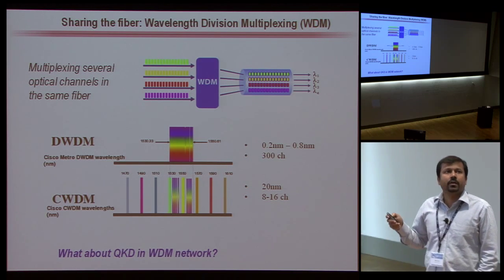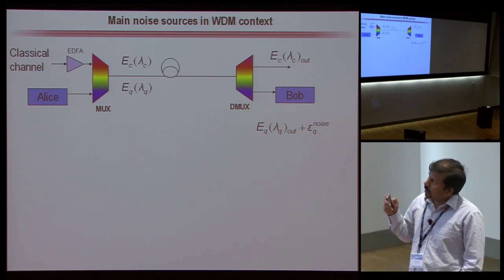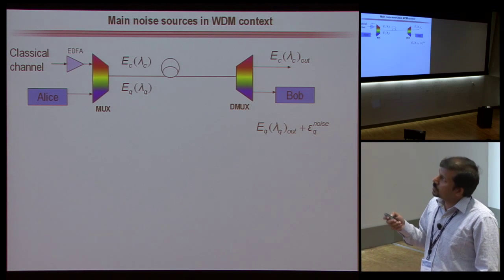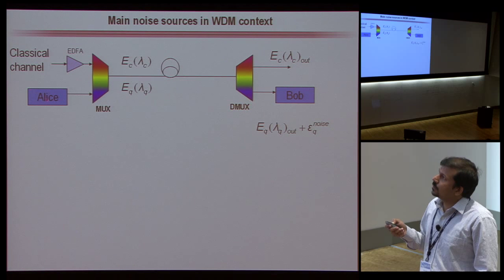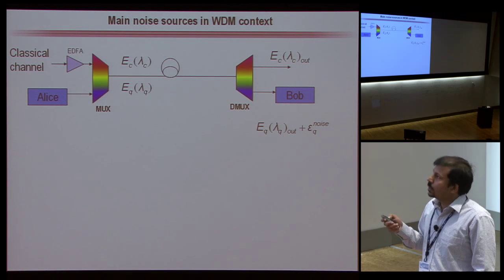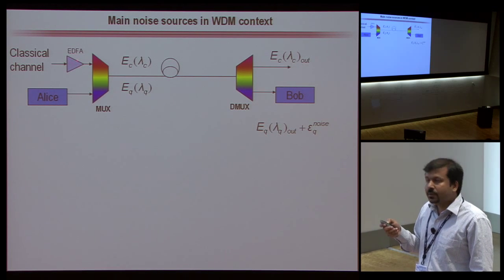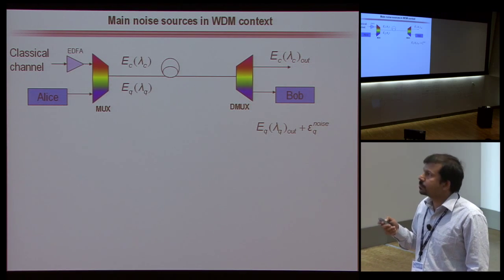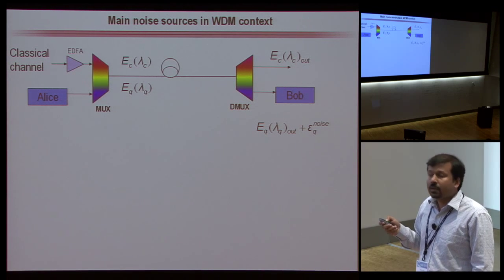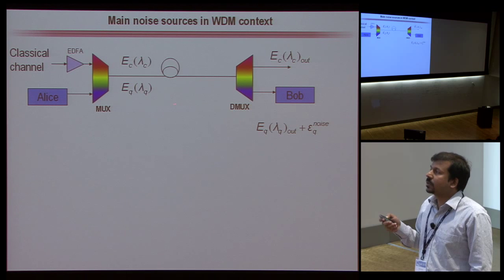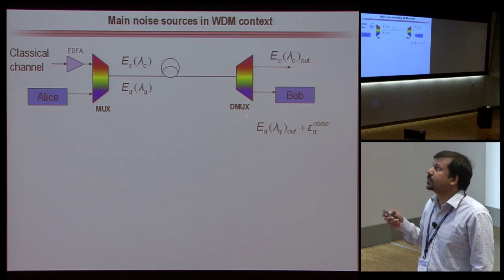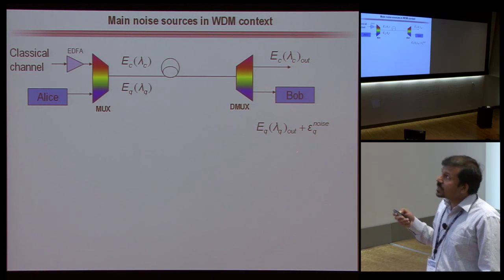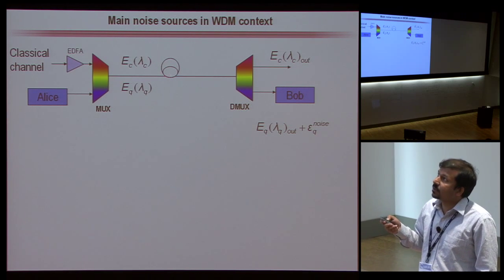So what about QKD in a WDM network? In a simple WDM network, you send a classical channel and the quantum channel through a single optical fiber. The classical channel is first amplified using an erbium-doped fiber amplifier, then multiplexed into the optical fiber using a DWDM module. Alice also sends her quantum signal through the same channel. At Bob's side, Bob demultiplexes the quantum signal from the fiber using another DWDM module, and gets the quantum signal plus noise generated by the classical signal.